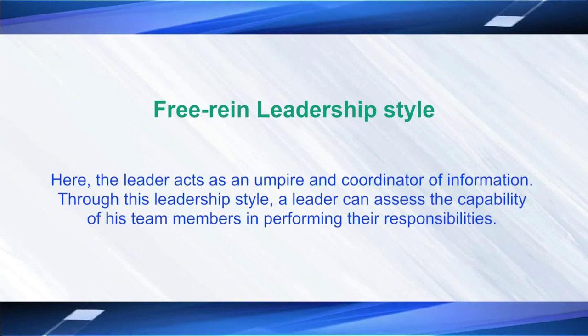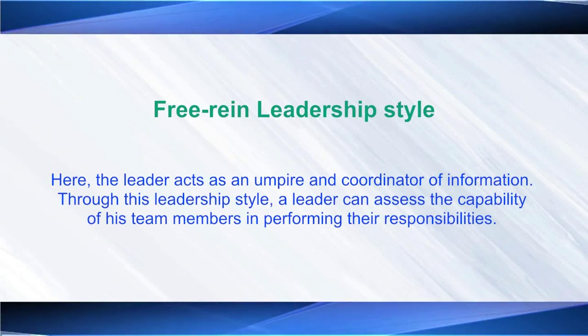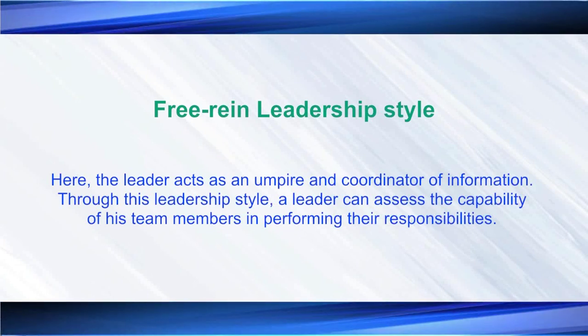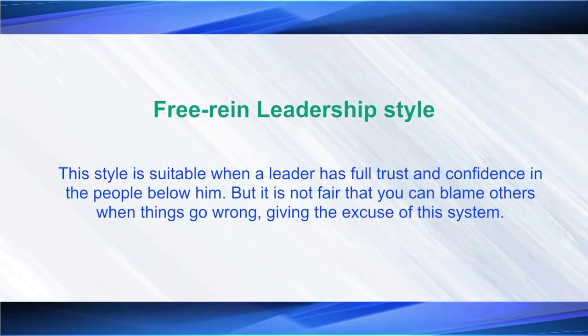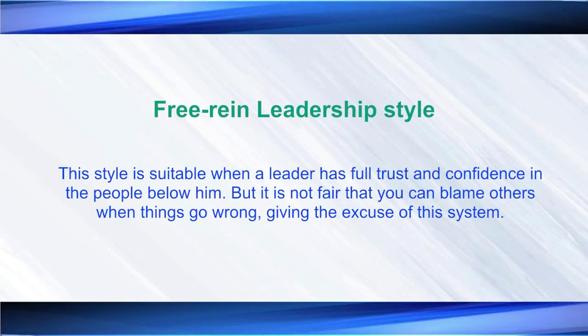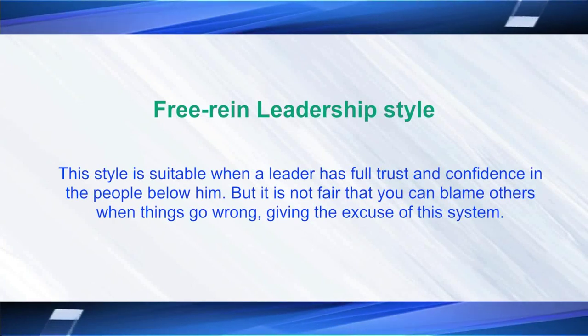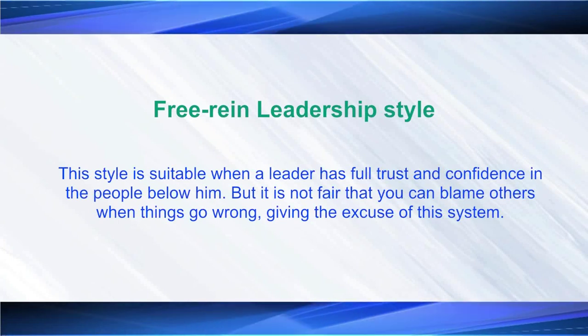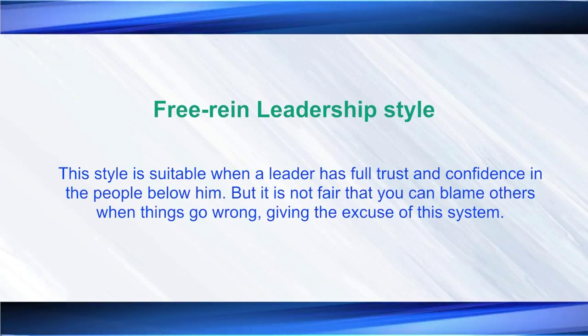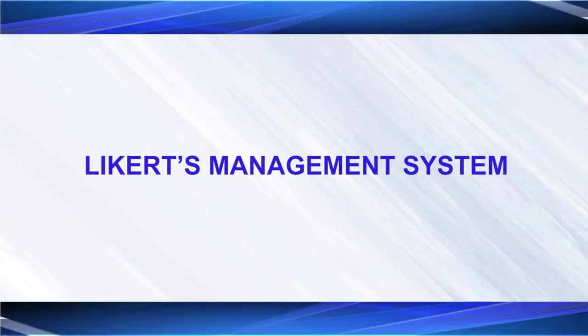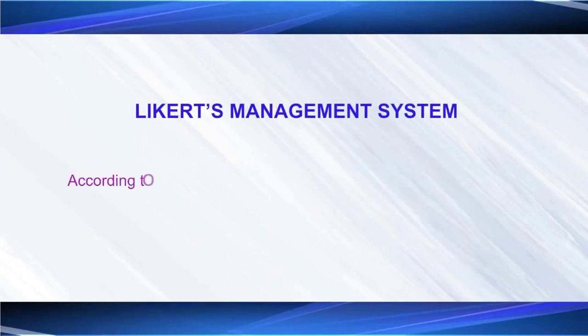Through free-reign leadership, a leader can assess the capability of team members in performing their responsibilities. This style is suitable when a leader has full trust and confidence in the people below him, but it is not fair to blame others when things go wrong. To summarize, the three styles of leadership are autocratic leadership, democratic leadership, and free-reign leadership; depending on the situation and the type of organization, these three styles vary and are used differently.